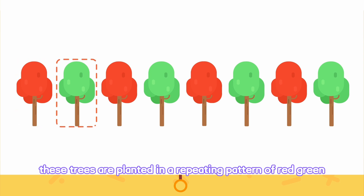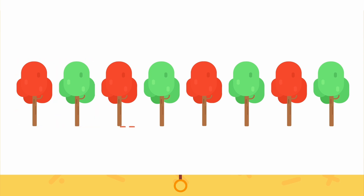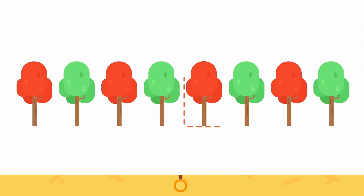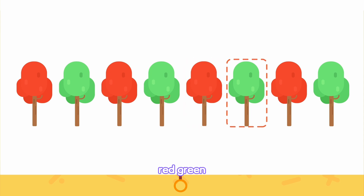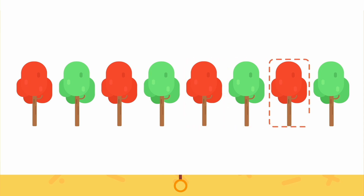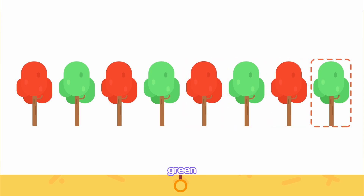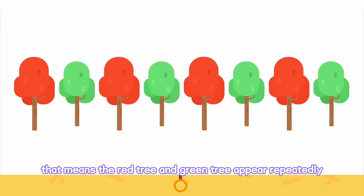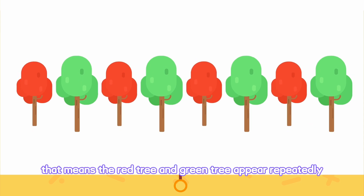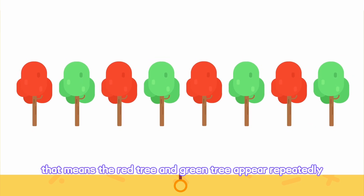These trees are planted in a repeating pattern of red, green, red, green, red, green, red, green! That means the red tree and green tree appear repeatedly!